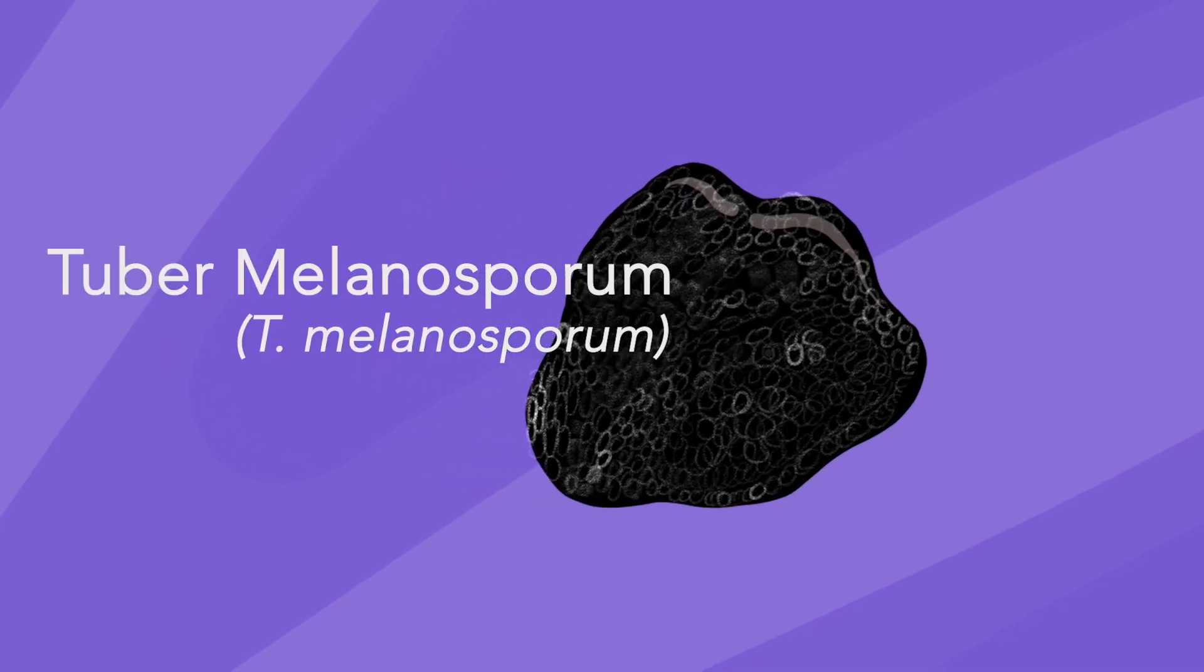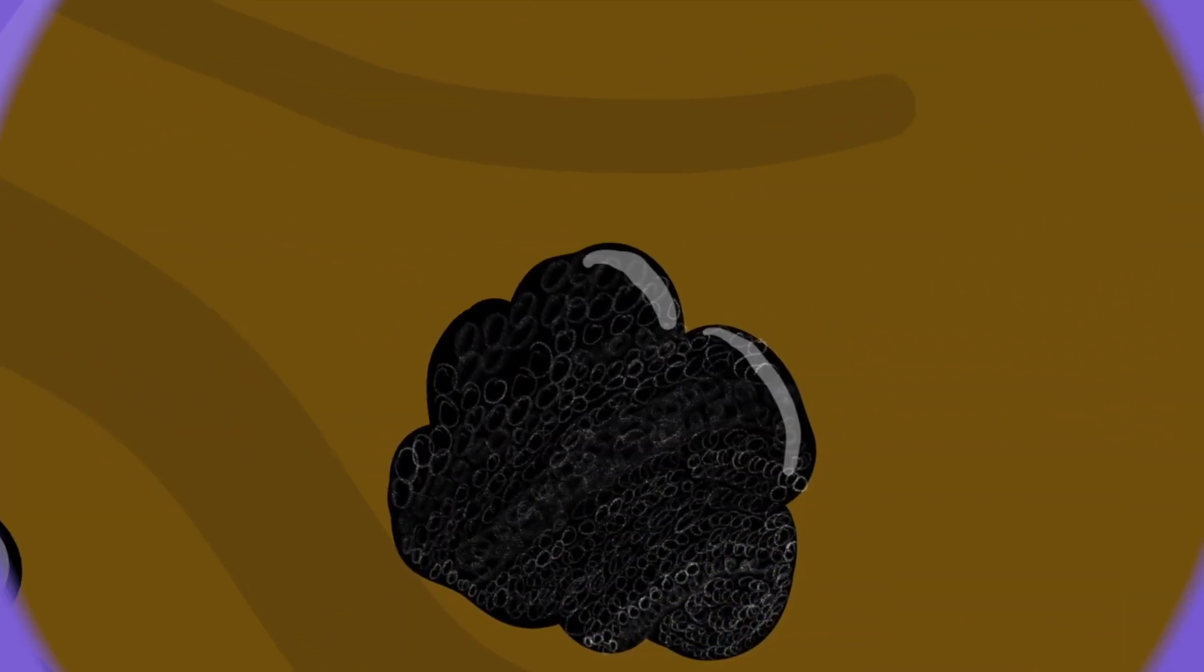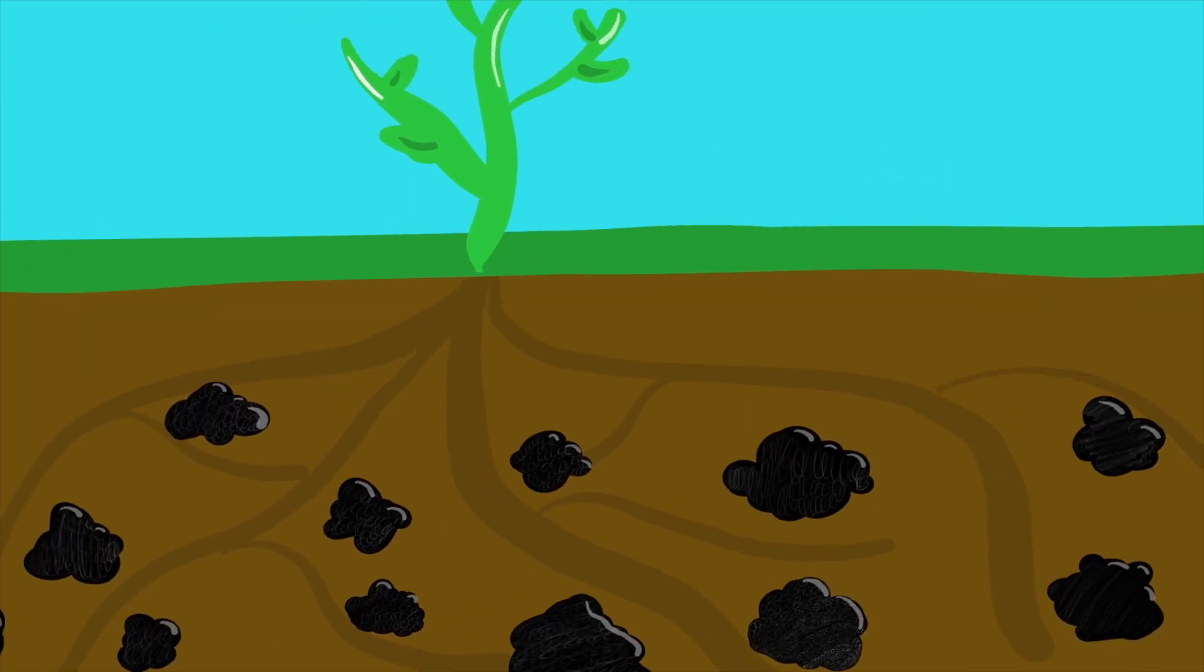The Périgord black truffle, scientifically named Tuber melanosporum, is an ectomycorrhizal fungus, meaning the fungi has a symbiotic relationship with the roots of host plants.